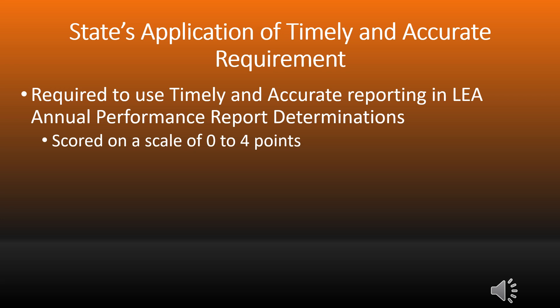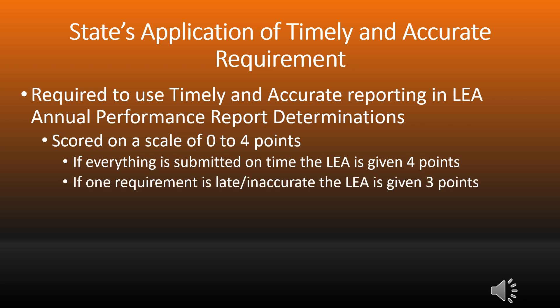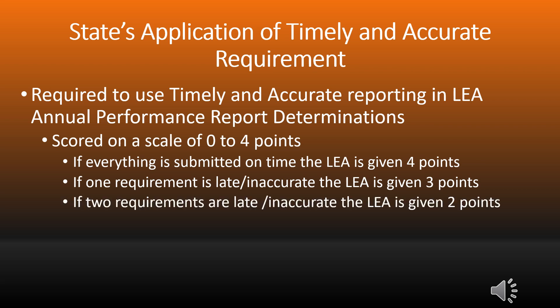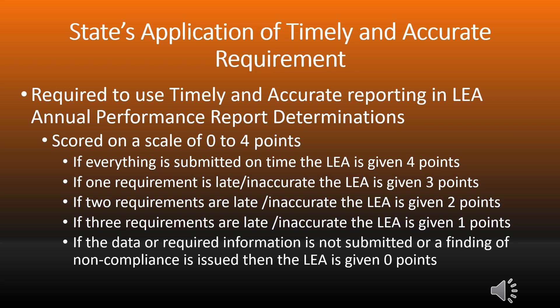In Arkansas, this is scored on a scale of 0 to 4 points. If everything is submitted on time, the LEA is given 4 points. If one requirement is late or inaccurate, the LEA is given 3 points. If two requirements are late or inaccurate, the LEA is given 2 points. If there are three or more requirements that are late or inaccurate, the LEA is given 1 point. If the data or required information is not submitted or a finding of noncompliance is issued, then the LEA is given 0 points.